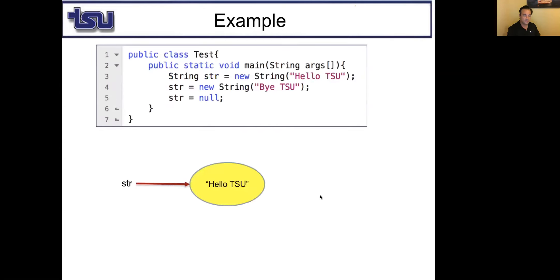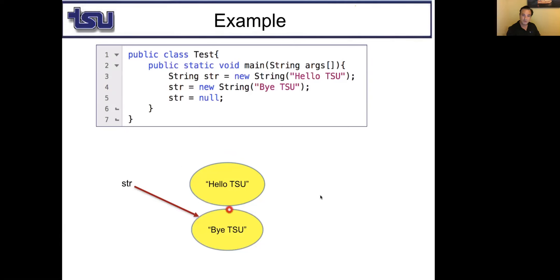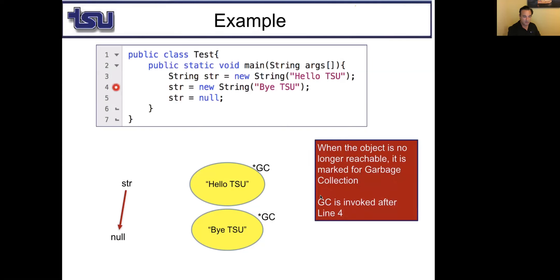Here is another example. First we have str, pointing to a memory space containing 'Hello TSU.' Then str is reassigned to another string — we allocate new memory space for that new string, and str points to that new memory space. It no longer points to the original space. Is the original space reachable? No. Then it will be marked for garbage collection as soon as we are past line 4. Then I say str is null, meaning str points nowhere, and the second memory space will also be marked for garbage collection.